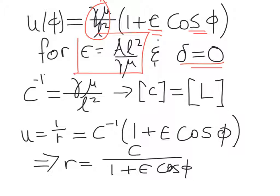We can define a new constant c, which is the inverse of all of this business. And it turns out that the units for c are actually length. If you actually plug in your gravitational constants and the reduced mass and the angular momentum, what you'll find is that c has units of length.